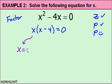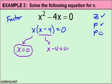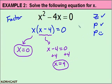For the first factor, x equals zero. Since x is already by itself, we've solved for the first solution: x equals zero. For the second factor, x minus 4 must equal zero. Adding four to both sides gives us x is equal to four, which is the second solution for this equation.